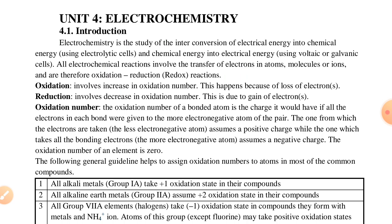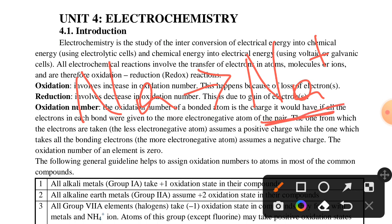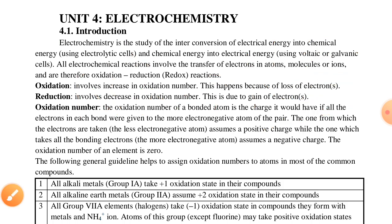Oxidation involves increasing oxidation number. This happens because of loss of electrons — when an atom loses electrons, its oxidation number increases. This is oxidation. For example, sodium goes from oxidation number 0 to plus 1.